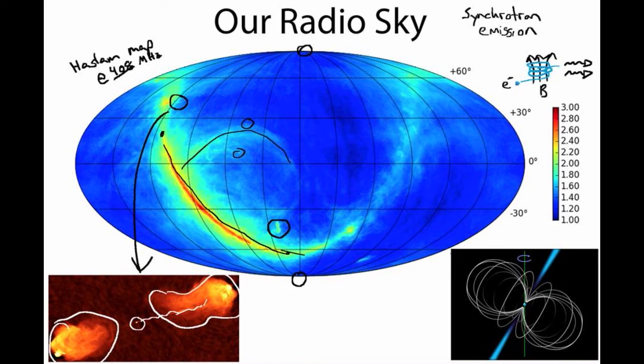Stars themselves at radio frequencies are very, very dim. We can hardly even see the stars that are nearest to us in radio wavelengths. But galaxies are extremely bright as, for example, Cygnus A over here or over here, which is Centaurus A.